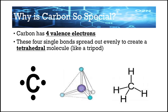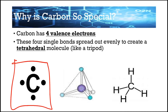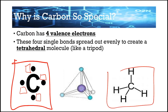Moving on — why is carbon so special? Carbon has four valence electrons. Looking at the dot diagram, those single dots mean they are ready to be shared or paired. Every element wants to fill the octet rule, so carbon has four empty spaces for things to attach. When hydrogen atoms attach in those four spots, it creates a tetrahedral shape. If you take AP Chem later on, you will have to know all of these shapes and more.